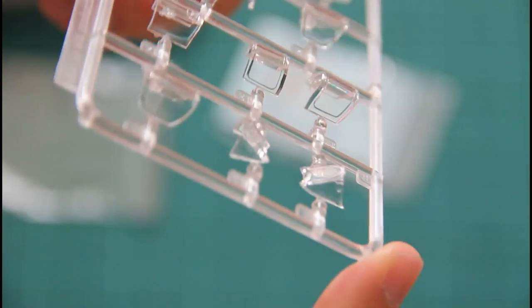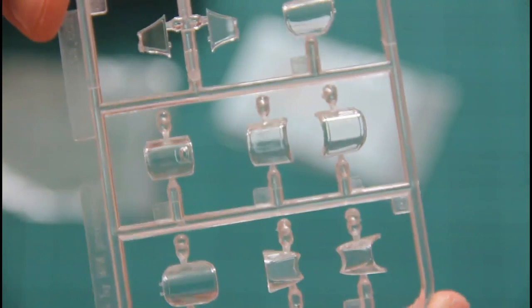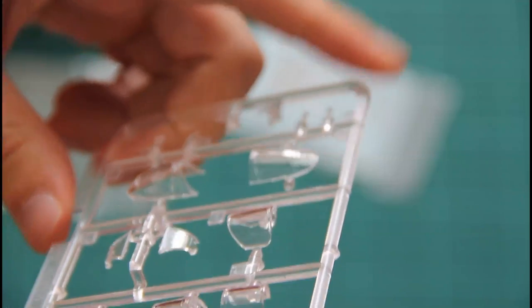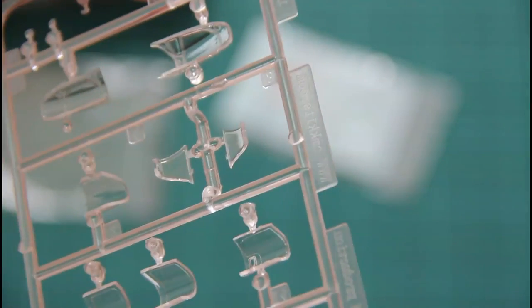Then we have the transparent sprue. This model is interesting because even though it's 172nd scale and some manufacturers say it's better to mold the model with closed canopy, this one will be possible to assemble with open canopy too. As you can see, all transparent parts are molded in excellent quality, so I think they will look good after proper masking and painting.